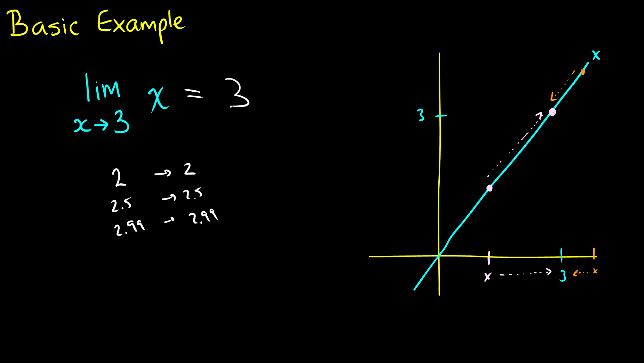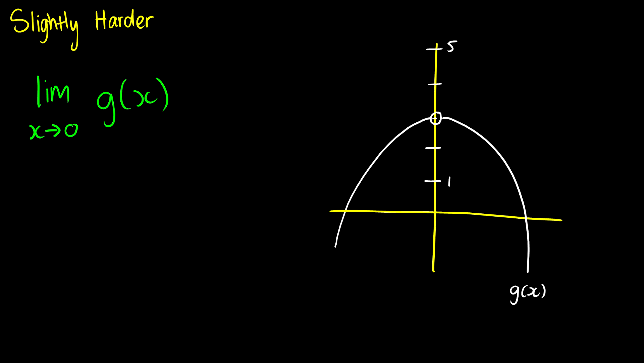This example isn't very exciting because it's obvious. Let's look at something slightly harder. Here I don't have a formula — I'm just going to ask you graphically what the limit is. In this curve, there is no value at g of 0. When x is 0, there is no value — this is an empty spot.